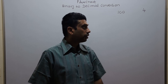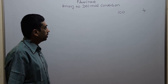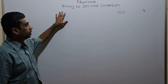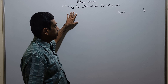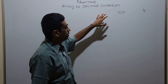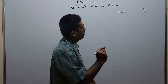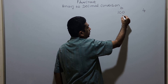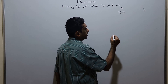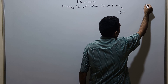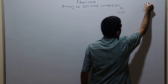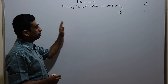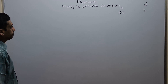Hello friends. We are going to draw a flowchart to convert a binary number to a decimal number. For example, if I am giving a binary number 100, it is converted into the equivalent decimal number 4. So for this, we are going to draw a flowchart.